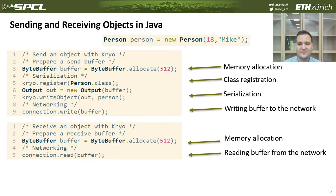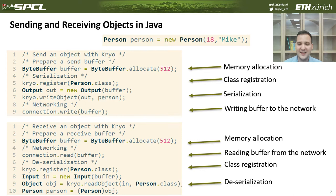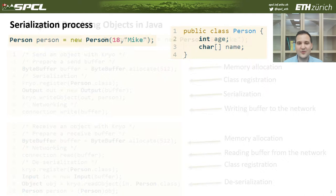The receiver would perform similar steps. It would need to allocate a receive buffer, then read this byte stream from the network to this buffer, and then perform deserialization — the process of reading this byte stream and reconstructing the sent object. As you can see, such a simple task as sending one object entails so many steps.